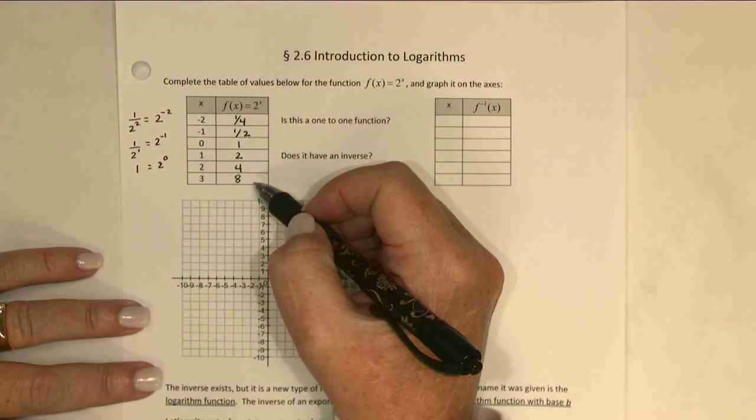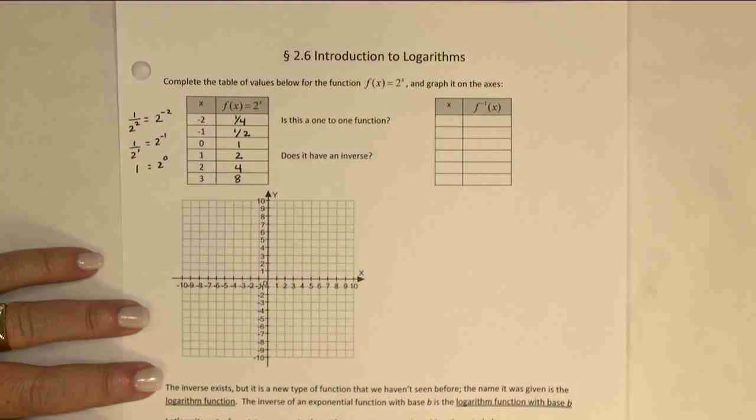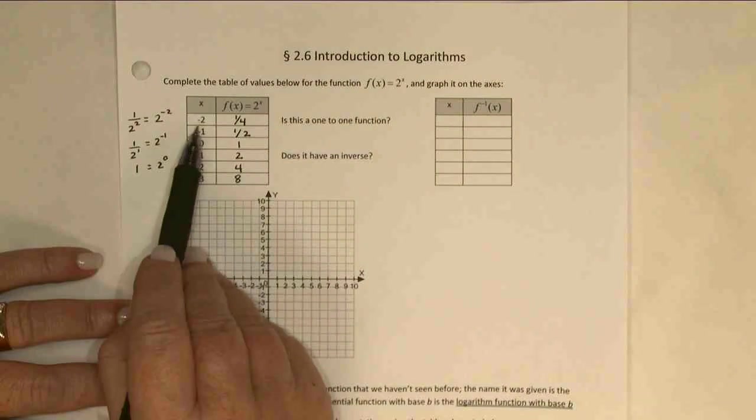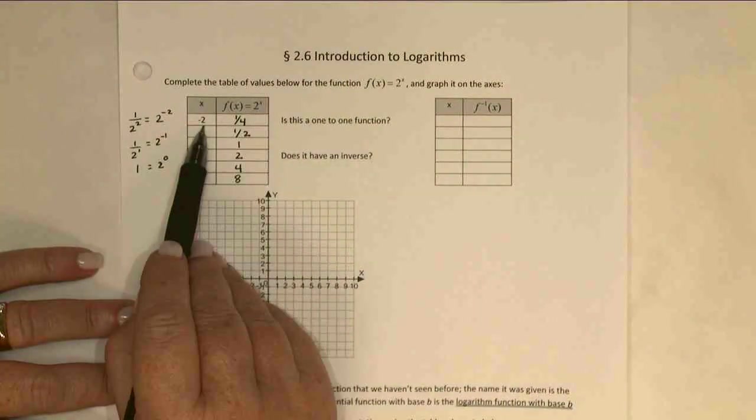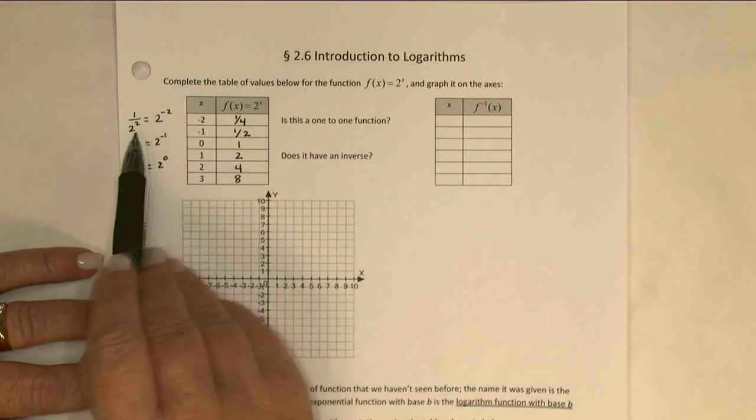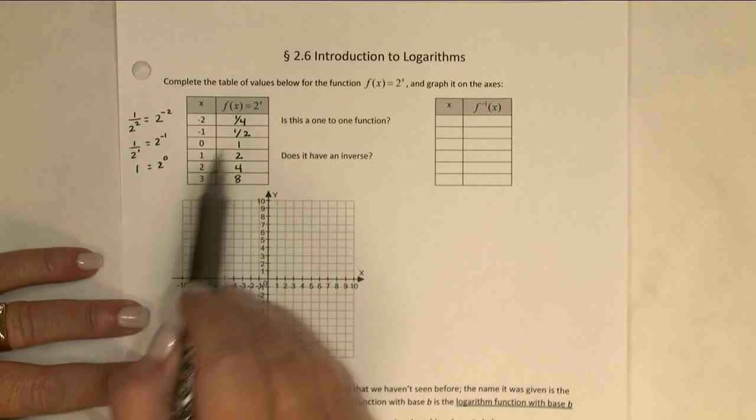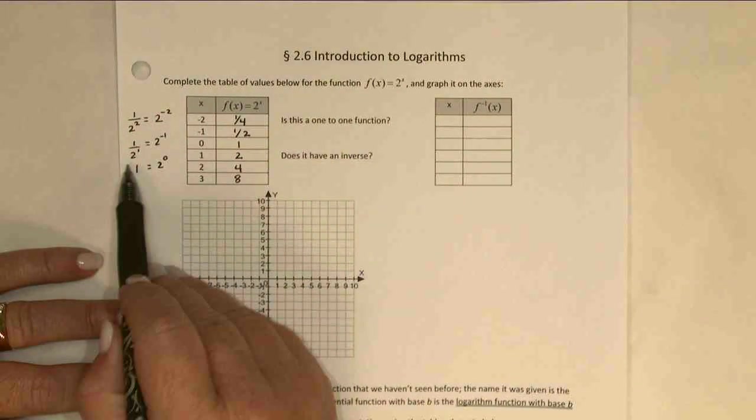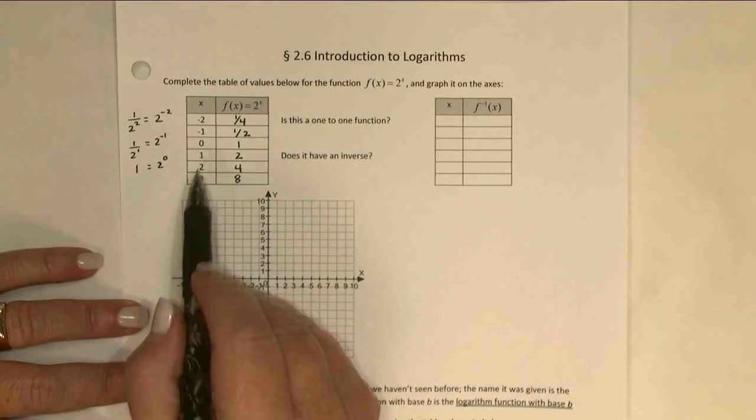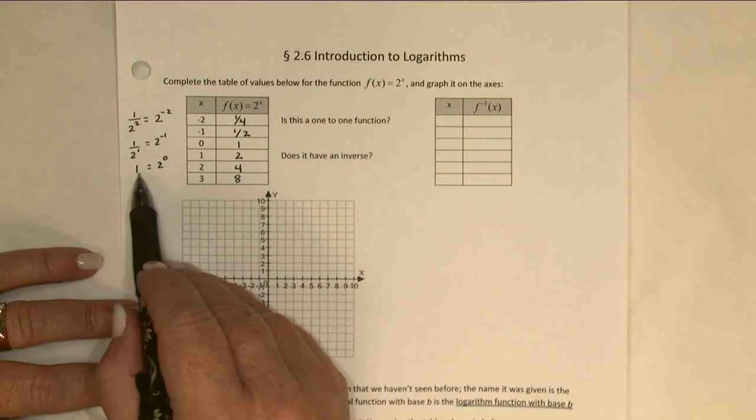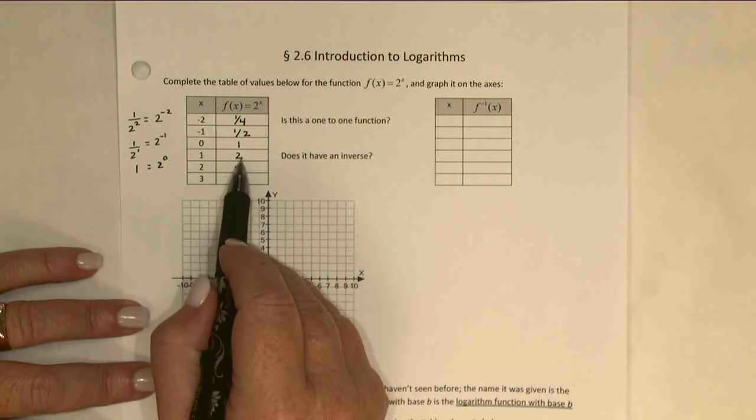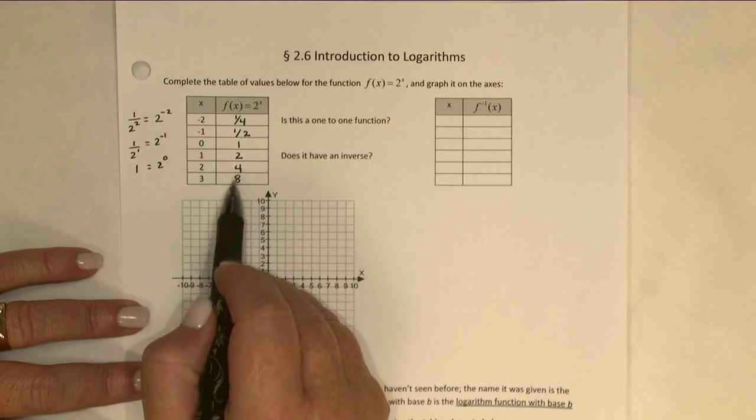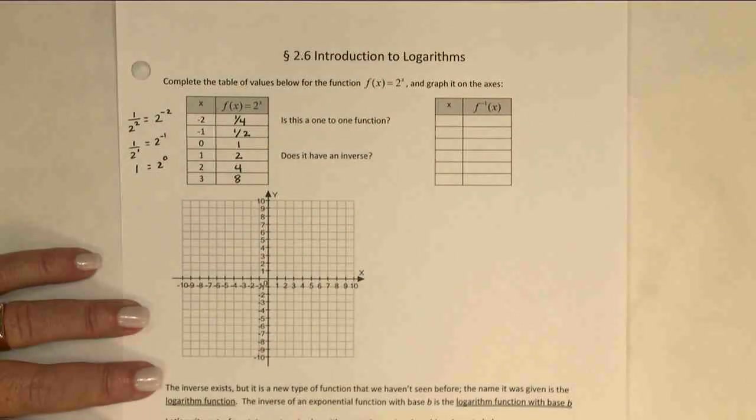I've got a little table of values here. I've pre-filled in the y values. 2 to the negative 2 is really 1 over 2 squared, or 1 fourth. 2 to the negative 1 is 1 over 2 to the first, 1 half. 2 to the 0 is 1. 2 to the first is 2. 2 squared is 4. And 2 cubed is 8.